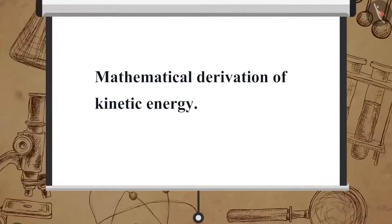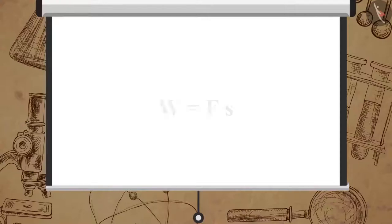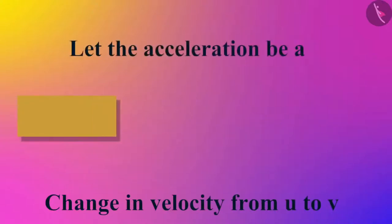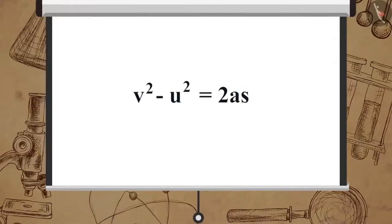Now let us look at the mathematical derivation of kinetic energy. Suppose an object with mass m is moving with a uniform velocity u. Let a force f act on the object and it gets displaced through a distance s along the direction of force. The work done W is equal to f·s. The work done causes a change in velocity from u to v, and let the acceleration produced be a. From the third equation of motion: v² − u² = 2as, from which displacement s = (v² − u²) / 2a. We also know f = ma.